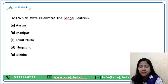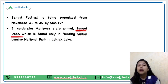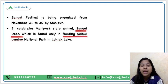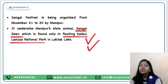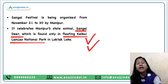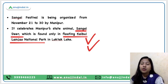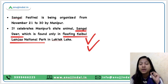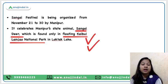Which state celebrates the Sangai festival? Manipur celebrates this festival. It celebrates the Sangai deer, which is the state animal of Manipur as well. This animal is found in the floating Keibul Lamjao National Park in Loktak Lake. Now, can you tell me where the world's largest river island is located? It is in India — just tell me which state.